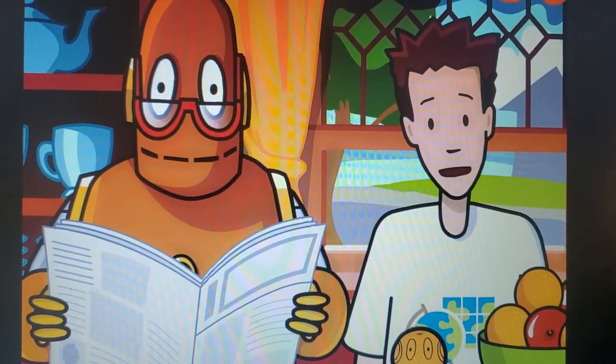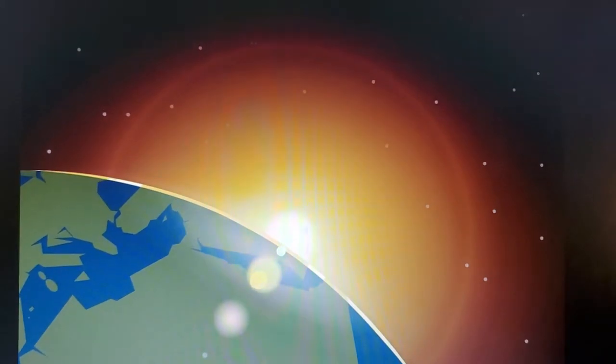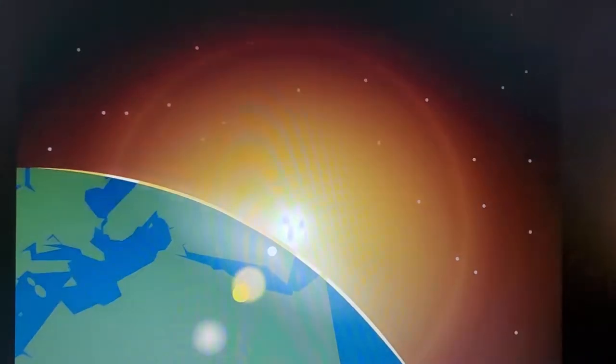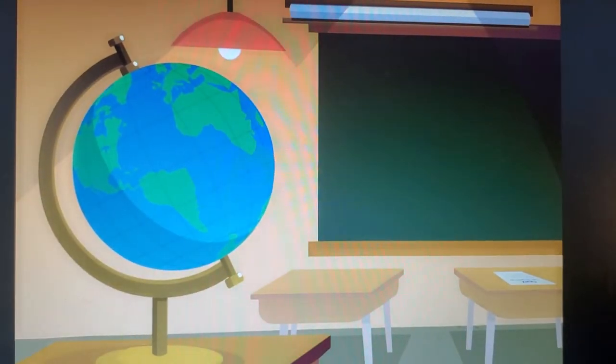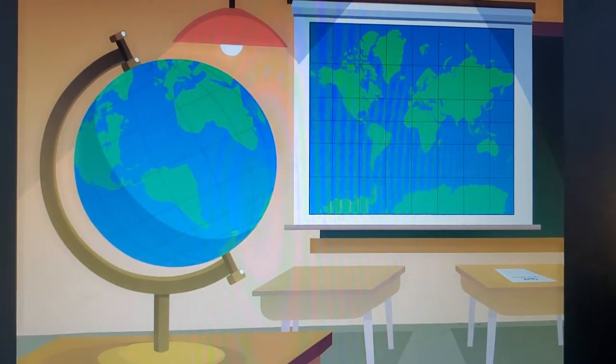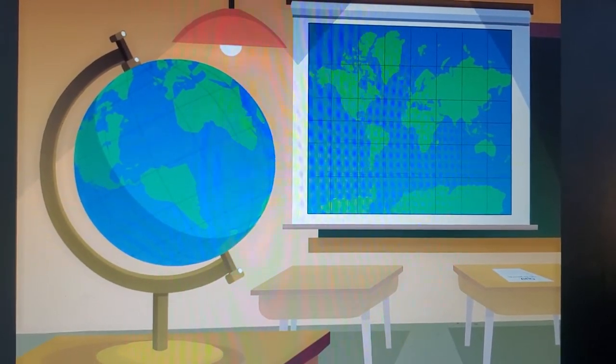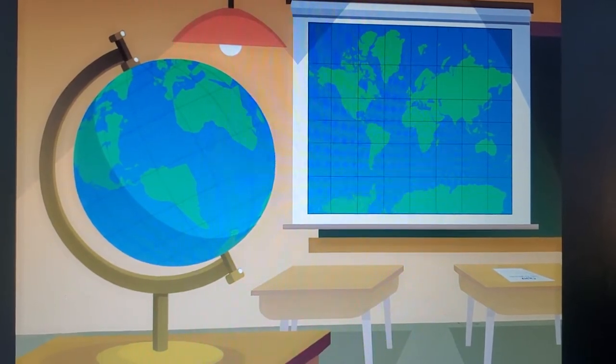Well, actually, neither one's entirely right. The Earth's surface is curved. To recreate it on a flat piece of paper, you have to change it a little bit. So no map can represent all of Earth's features with total accuracy.